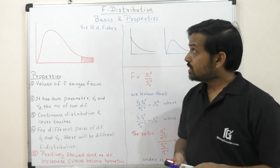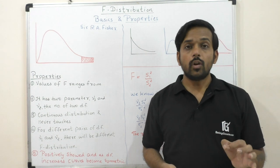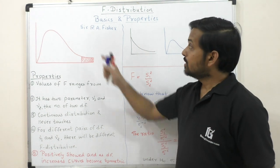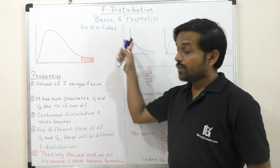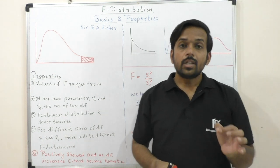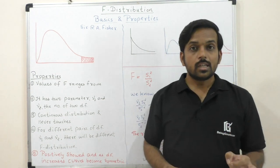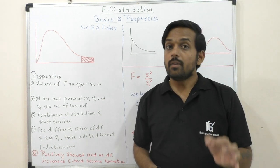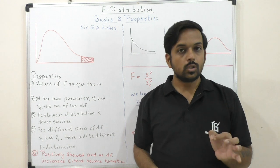F distribution was developed by Sir R.A. Fisher. R.A. Fisher used it in the statistical analysis of variance in statistical analysis.